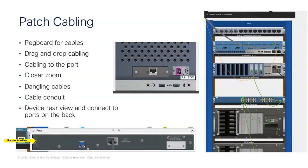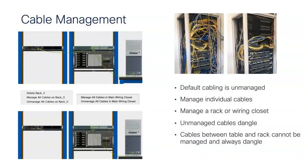We can zoom in to see devices up close, and we can see the front and back of devices — switch between both sides. Students can see both sides of a device, whereas before you could only see one side. We can also manage cables. Previously you couldn't manage cables in Packet Tracer and everything became a mess. Now we can manage them and things start to look much more organized.